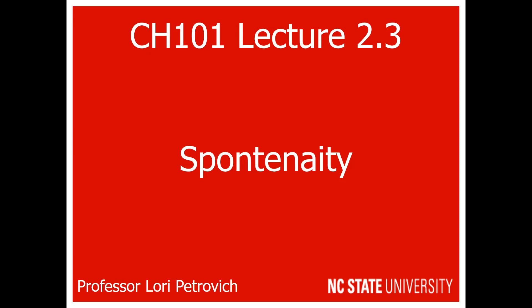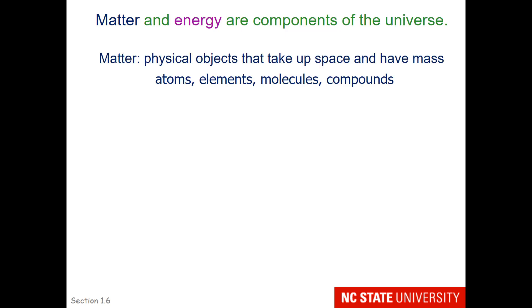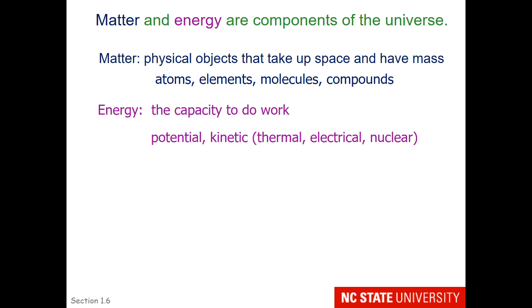There's actually a very specific definition. Matter and energy are components of the universe. Matter is classified in chemistry as atoms, elements, molecules, and compounds — these are physical objects that take up space. Energy is defined as the capacity to do work, and it can be in two forms: potential or kinetic.